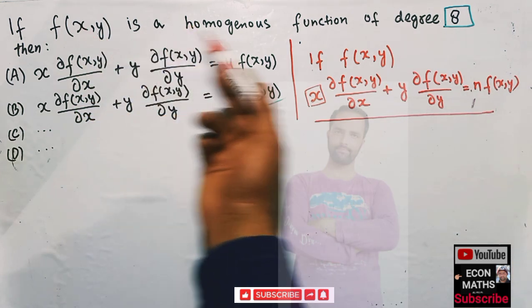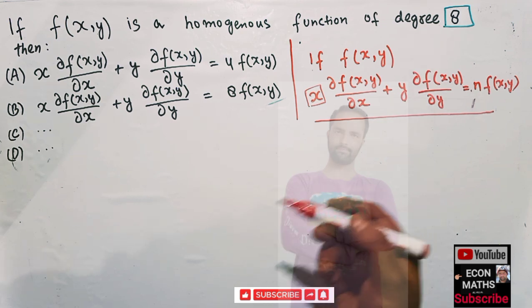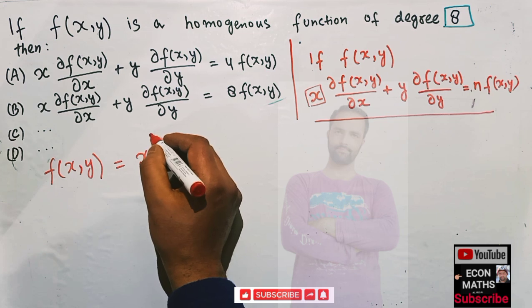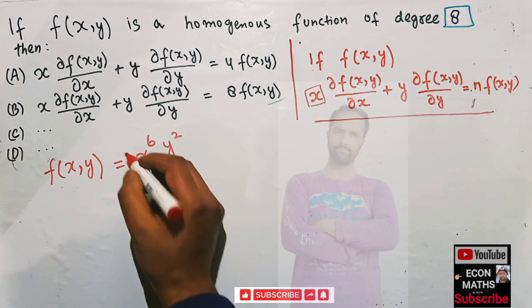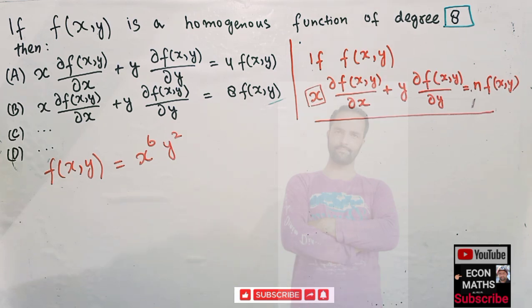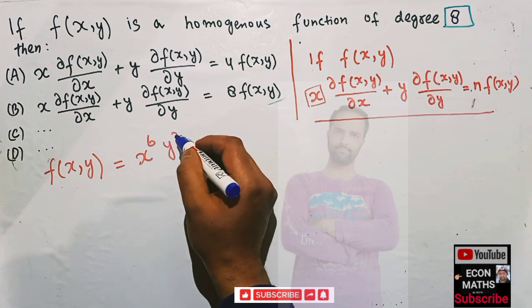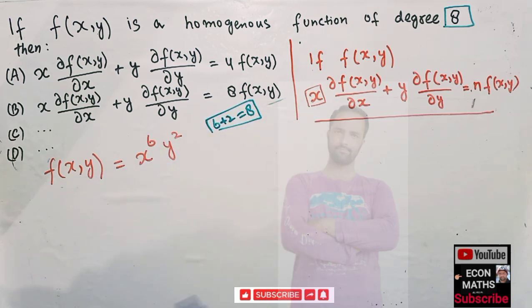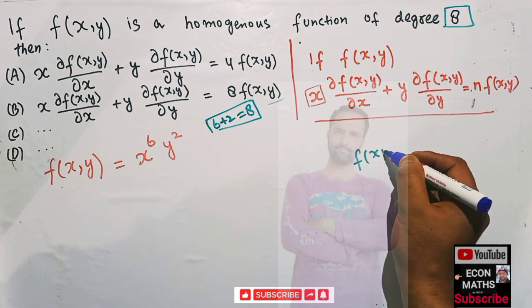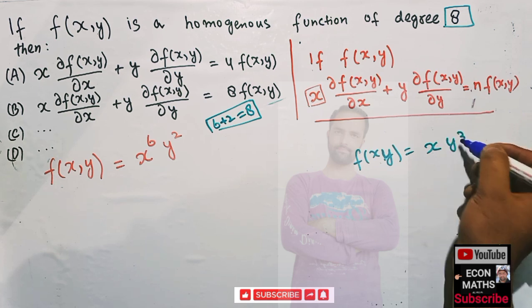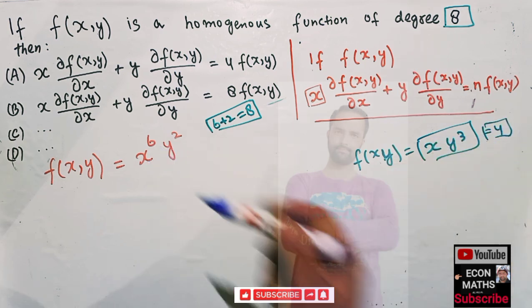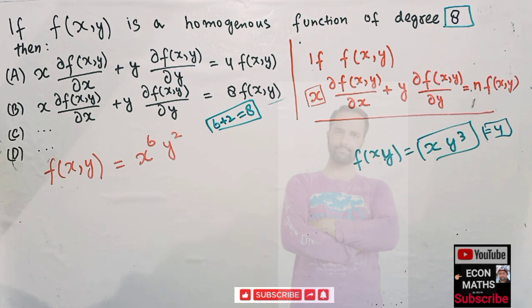Let us see what is meant by a function which is homogeneous of degree 8. We can write f(x,y) = x⁶y². This function is homogeneous of degree 8 because when we add up the exponents, 6 plus 2 equals 8. Similarly, if f(x,y) = xy³, this function is homogeneous of degree 4, since 3 plus 1 equals 4. Just add up the exponents and they give you the degree of homogeneity.